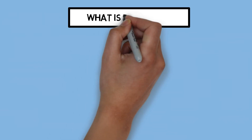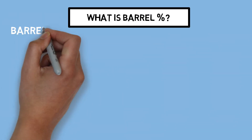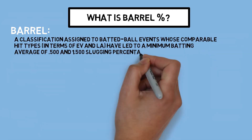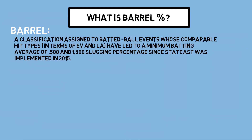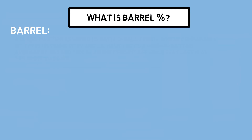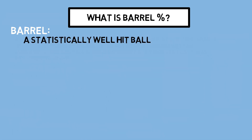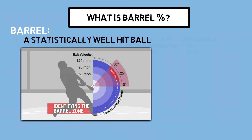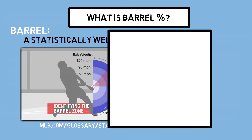What is barrel percentage? The definition from MLB.com reads that it is a classification of a batted ball event whose exit velocity and launch angle values lead to a minimum batting average above .500 and a slugging percentage above 1.500 since the beginning of Statcast in 2015. That's a fancy way of saying a statistically well-hit ball based on all past data. On their website, you can find a helpful chart showing the barrel zone — a launch angle graph where the distance from center represents exit velocity, with dark red indicating the barrel zone.